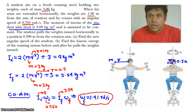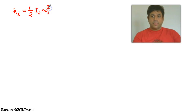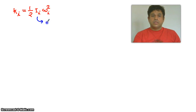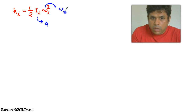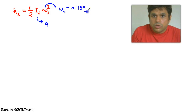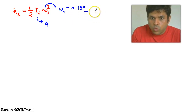Next, we find the initial and final kinetic energy. The initial kinetic energy expression is ½ × I_initial × ω_initial². Substituting I_initial = 9 kg·m² and ω_initial = 0.750 rad/s and squaring it, the initial kinetic energy comes out to 2.53 joules.